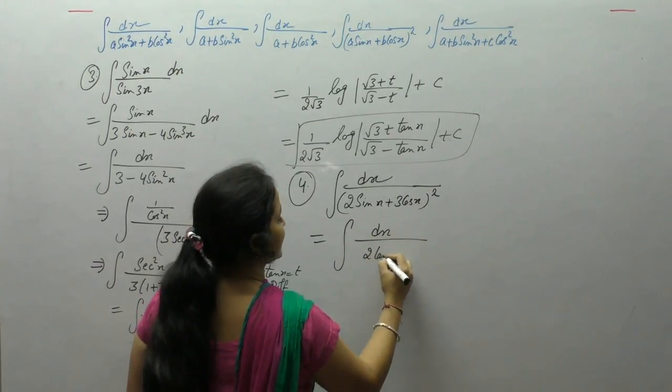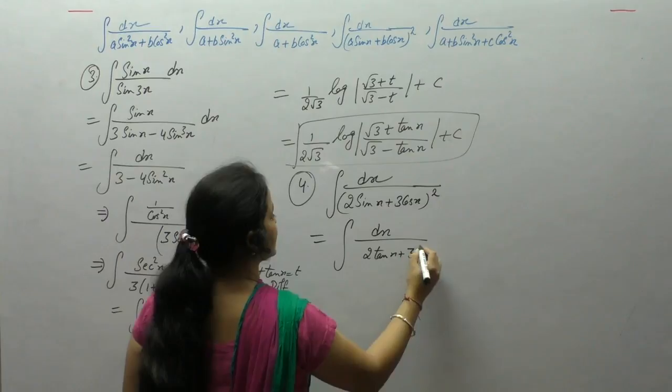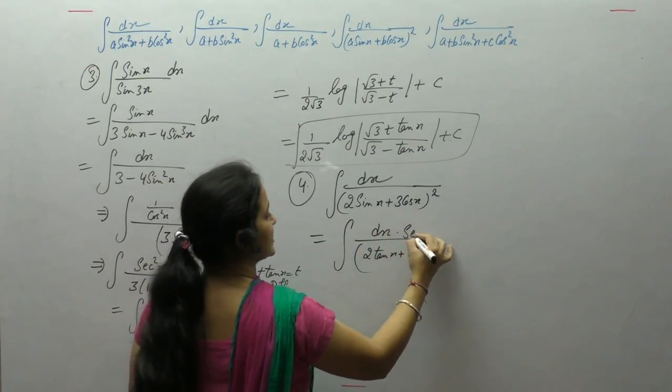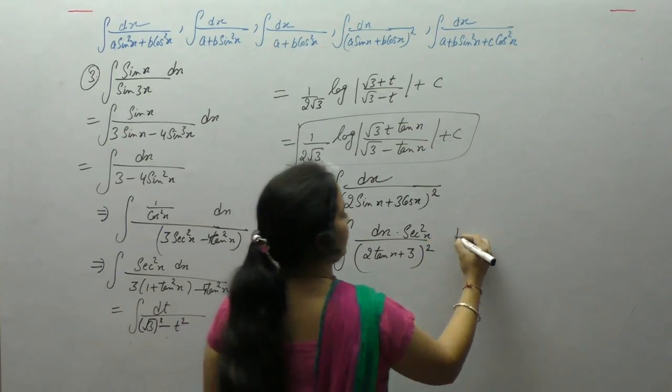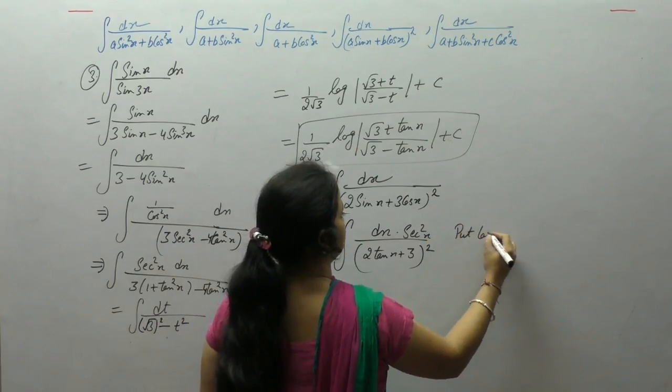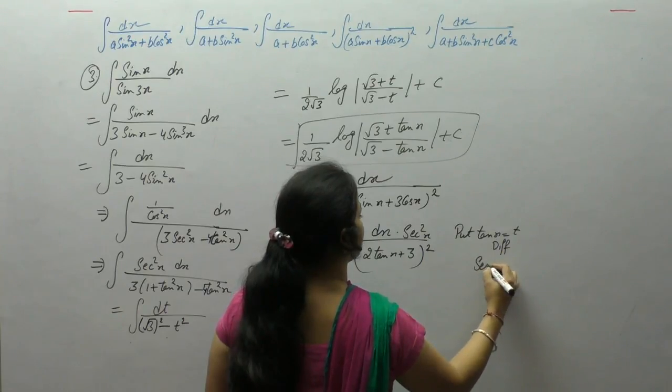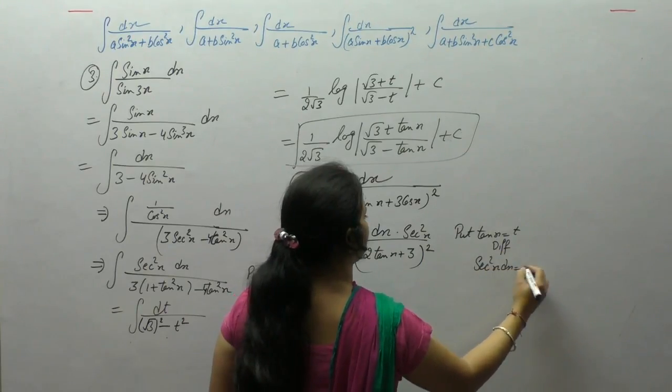sin upon cos is tan, cos upon cos is 1 square, so 1 upon cos is sec square x. Now put tan of x as t, differentiated derivative of tan is sec square x dx dt.